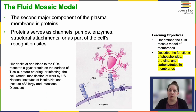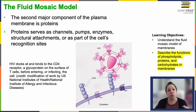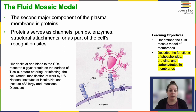The second major component of the plasma membrane is proteins. Proteins can serve as channels, as pumps, as enzymes on either side of the surface of the plasma membrane. They can be structural attachment points, and they are also part of the cell's recognition sites. In the image that we have on our slide, we can actually see an HIV molecule docking to the CD4 receptor site on a CD4 T cell.